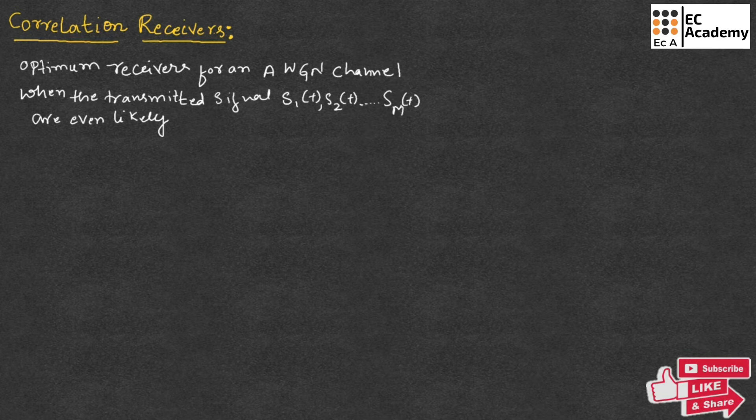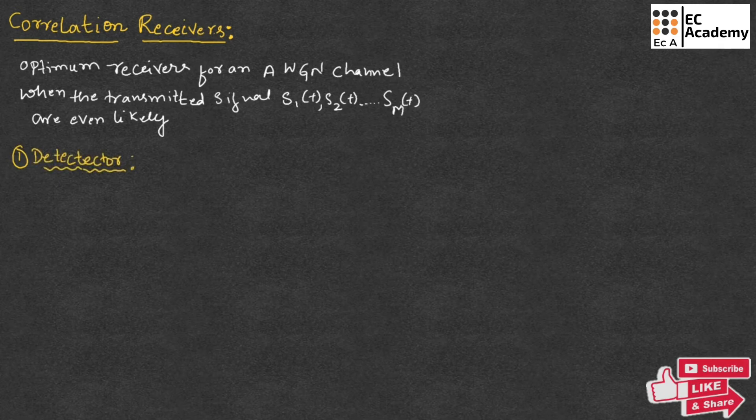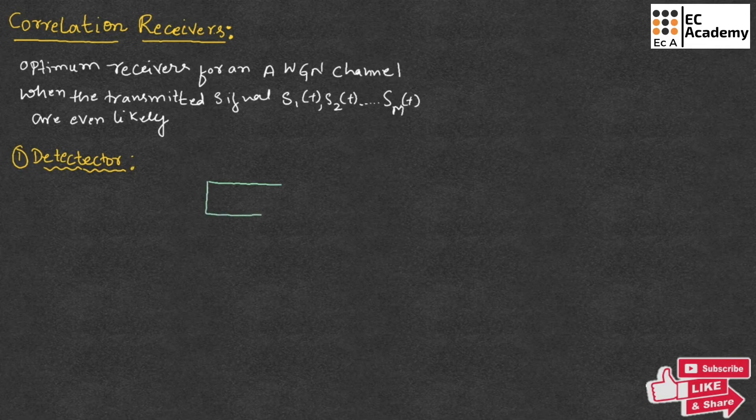This correlation receiver consists of two subsystems. First one is detector and second one is decoder. First, let us understand about detector. The detector consists of M correlators. It will have M number of correlators.